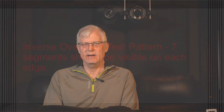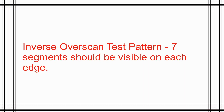Another way to check this is with the overscan pattern that shows seven segments on the top and the bottom of each side of the image. If you don't have seven segments, that means part of it has been stretched off of the screen. This has been done to hide information that can be visible with standard definition, but with high definition and ultra high definition sources, this isn't really a problem, and unfortunately it dramatically reduces the resolution of the display.